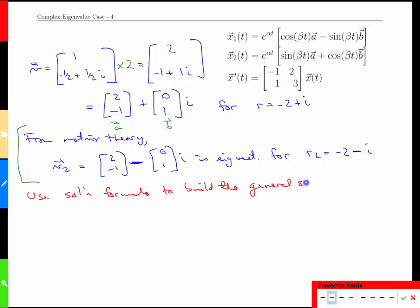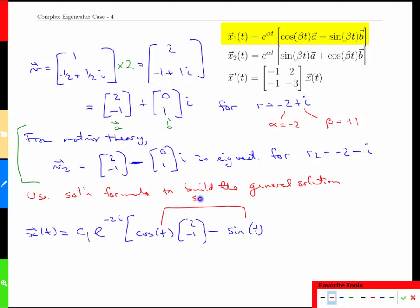What we need are two solutions that are linearly independent of one another. That's what this formula gives us. And so we get x(t), it's going to be a bit long but here it goes: some constant times the first solution. So e to the (what are our alphas and betas?) alpha is -2, beta is +1. So we have e^(-2t) times cos(t) times the vector a, which is the real part here [2; -1], minus the sine of t (so the same frequency) times [0; 1]. And that's done.